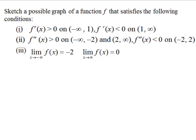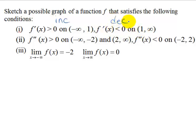Sketch a possible graph of a function f that satisfies the following conditions. It says possible because as long as you meet these conditions, the answers may vary a little bit. The first derivative is greater than 0 from negative infinity to 1, so that tells us the function is increasing on this interval. The first derivative is less than 0 from 1 to infinity, which tells us the function is decreasing on that interval.